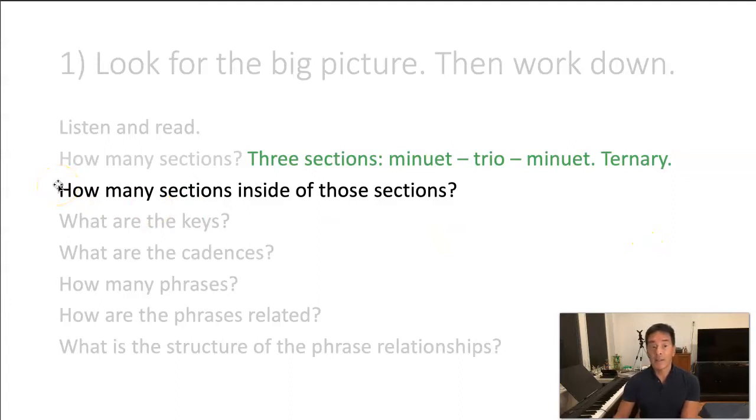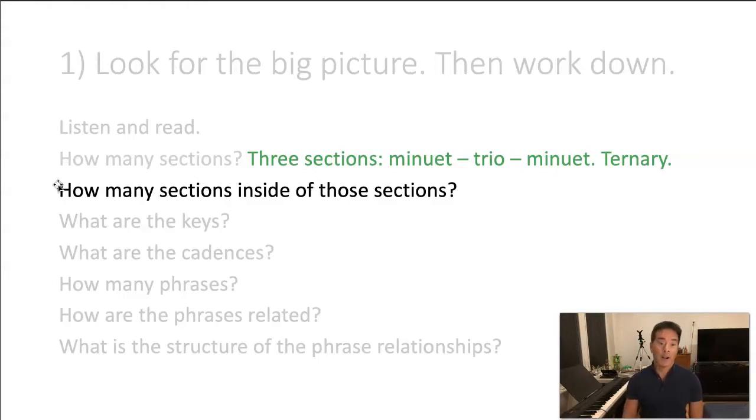The next question then is how many sections are inside of the minuet and inside of the trio? So let's take a look at that. It's not too difficult to see this because there's a repeat sign in both of these that divides it up. So you know there's at least two sections. And most of these pieces are either going to have binary or ternary sections. So overall, we can see here it looks like it begins with a certain pattern. Then it changes slightly. How do I know it changes? Well,